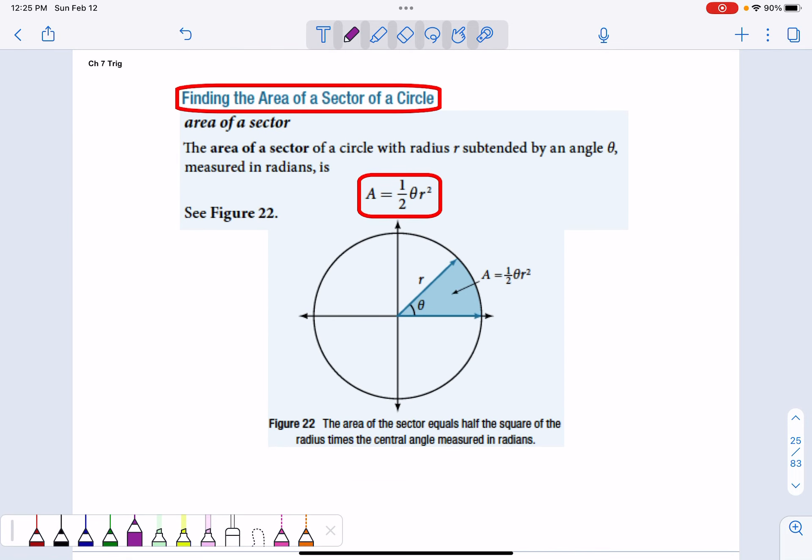Now, to find the area of a sector, there is a formula using radians. It's area equals one-half theta r squared. Area equals one-half theta r squared. A is the area of the sector, that almost triangular wedge.